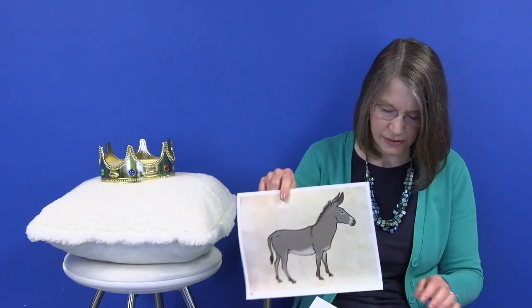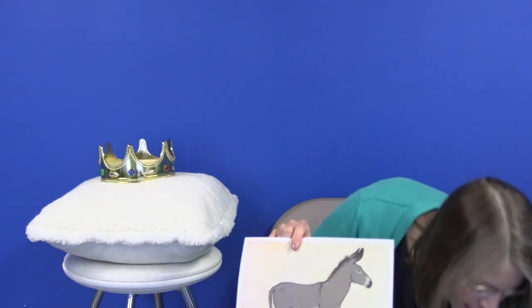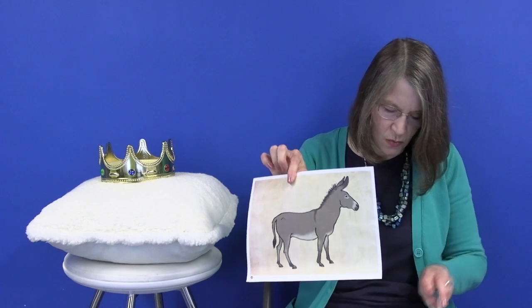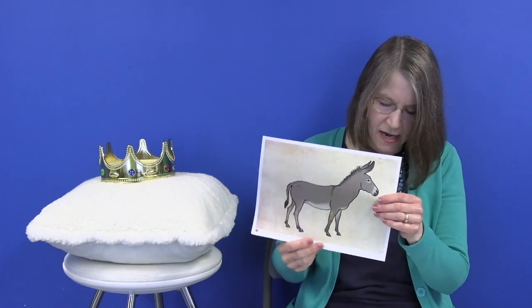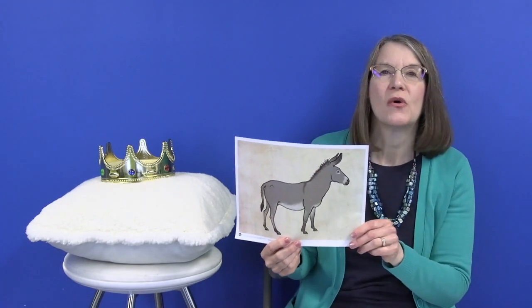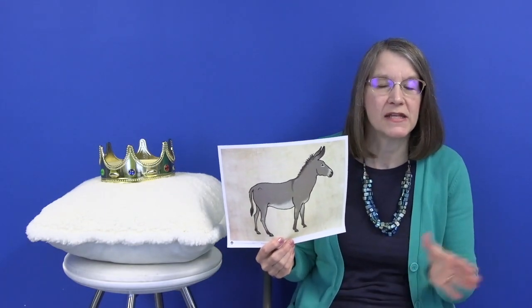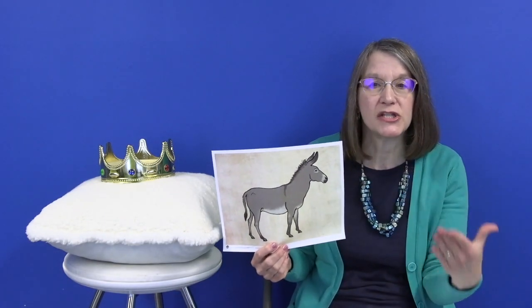That's right, a colt is a donkey's baby. It's a baby donkey. So Jesus told his disciples to go and get a colt. And this colt was tied up. And Jesus said that the colt was going to be tied up and his disciples would go and get it and bring it to him.